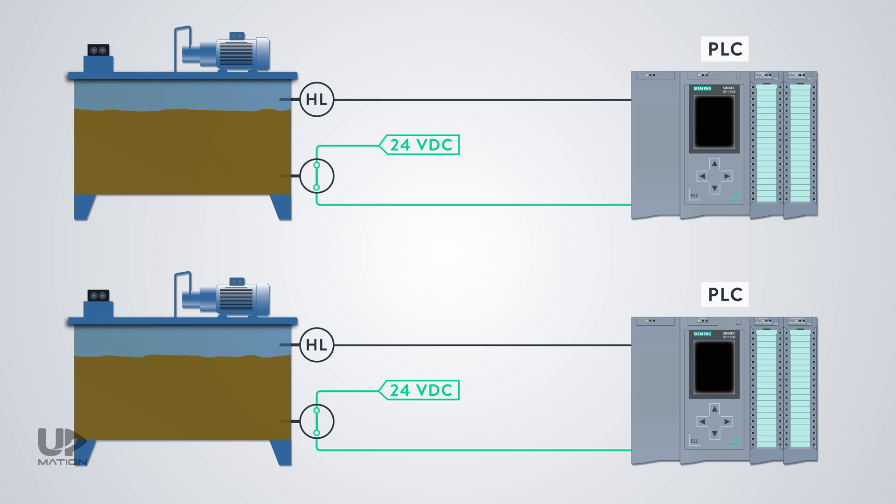As the last point, in all of these examples that we have reviewed together, the PLC cannot distinguish the cable damage from changing the push-button status or instrument switch status. In this case, we can use a specific type of switch,